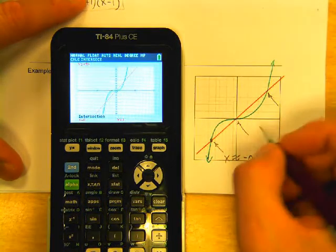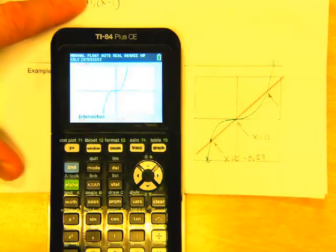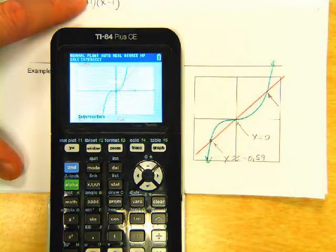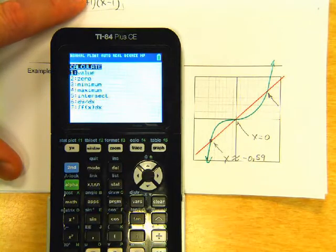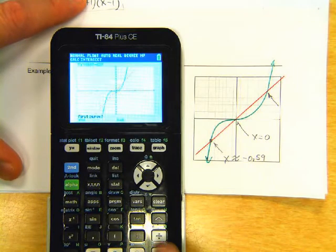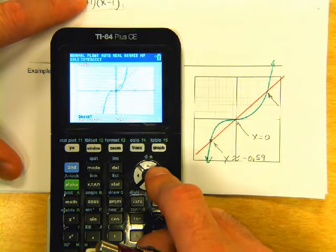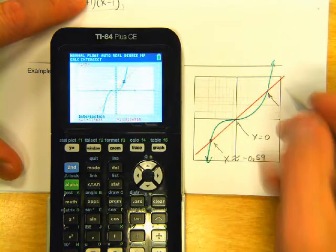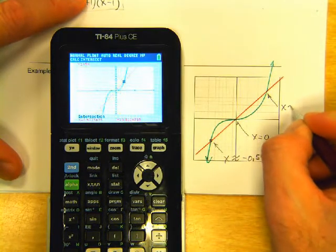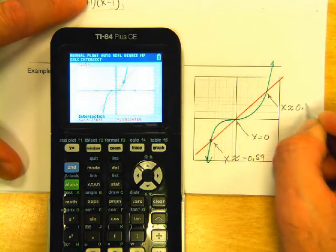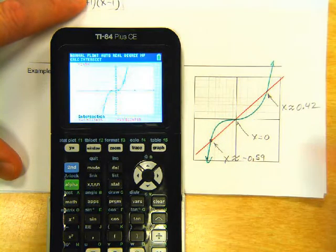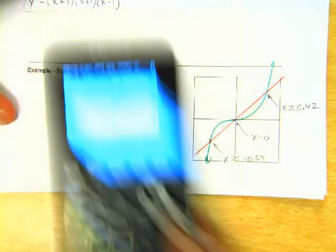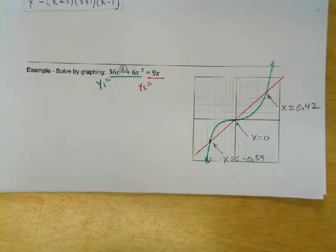Second calculate intersect, enter enter, the next one x approximately 0.42. What do you think? Alright, alright great.